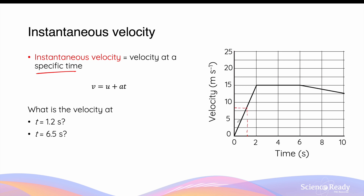To calculate instantaneous velocity more precisely, we can use the kinematic equation v = u + at, assuming uniform acceleration in the first two seconds. The velocity-time graph is linear in this interval, confirming uniform acceleration. We calculate acceleration as the final velocity minus the initial velocity divided by total time: the final velocity is 15 meters per second, the initial velocity is zero, and the time is two seconds, giving an acceleration of 7.5 meters per second squared.